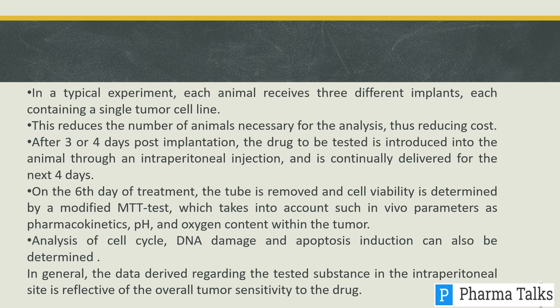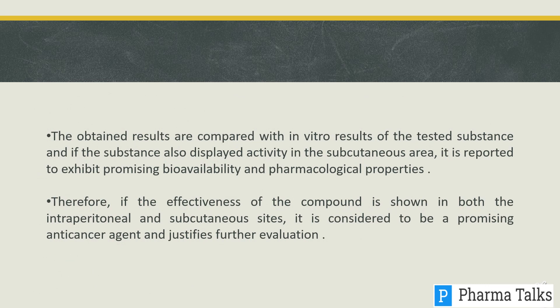After three or four days post-implantation, the drug to be tested is introduced into the animal through intraperitoneal injection and is continually delivered for the next four days. On the sixth day of treatment, the tube is removed and cell viability is determined by a modified MTT test, which takes into account in vivo parameters such as pharmacokinetics, pH, and oxygen content. Analysis of cell cycle, DNA damage, and apoptosis induction can also be determined. The data derived regarding the tested substance reflects tumor sensitivity to the drug. Results are compared with in vitro results, and if the substance also shows activity in the subcutaneous area, it is considered to exhibit promising pharmacological properties. If effectiveness is shown in both intraperitoneal and subcutaneous sites, the compound is considered a promising anti-cancer agent and justifies further evaluation.